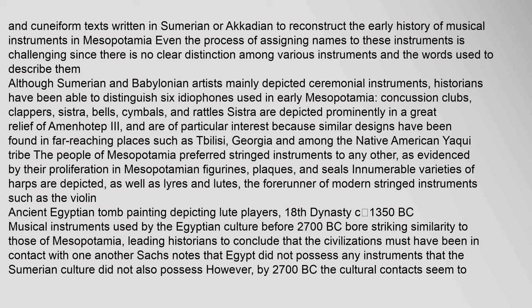Scholars must rely on artifacts and cuneiform texts written in Sumerian or Akkadian to reconstruct the early history of musical instruments in Mesopotamia. Although Sumerian and Babylonian artists mainly depicted ceremonial instruments, historians have been able to distinguish six idiophones used in early Mesopotamia: concussion clubs, clappers, sistrum, bells, cymbals, and rattles. The people of Mesopotamia preferred stringed instruments to any other, as evidenced by their proliferation in figurines, plaques, and seals. Innumerable varieties of harps are depicted, as well as lyres and lutes, the forerunner of modern stringed instruments.